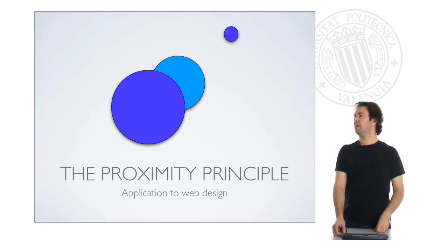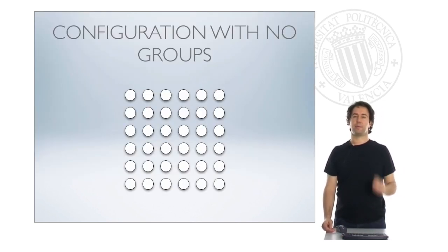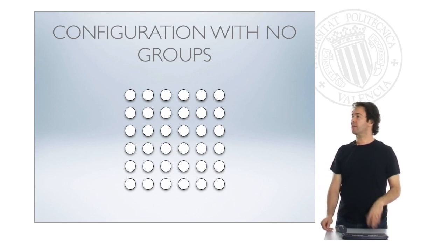Okay, first let's see what the proximity principle means. Here this is a configuration in which there are no groups. This is a neutral configuration, let's say.